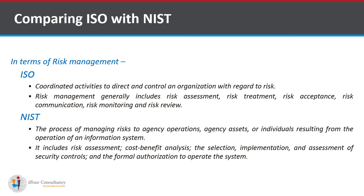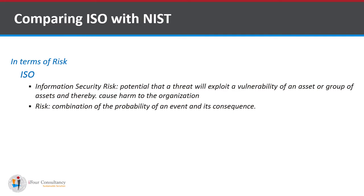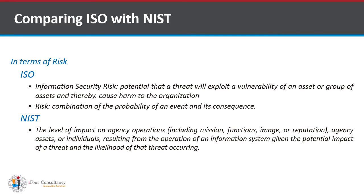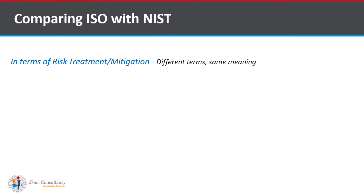Comparing ISO with NIST in terms of the definition of risk: ISO defines information security risk as the potential that a threat will exploit a vulnerability of an asset or group of assets, thereby causing harm to the organization — risk being a combination of the probability of an event and its consequence. NIST defines risk as the level of impact on agency operations, including mission, function, image, or reputation, agency assets, or individuals resulting from the operation of an information system, given the potential impact of a threat and the likelihood of the threat occurring.